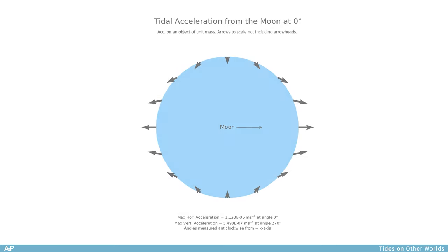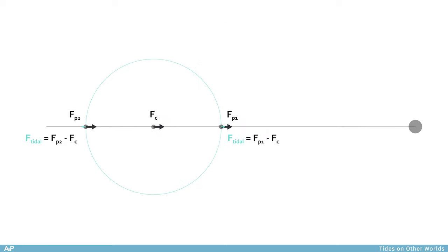I've just zoomed in so you can see this figure better — this is the end result of my code. You can see there are arrows showing the direction and magnitude of the tidal accelerations around points on the surface of the Earth, and the Moon is actually all the way to the right at zero degrees along the x-axis. I'll show you the code to plot our results at the end, but first we need to go through some of the maths about how we actually calculate tidal accelerations.